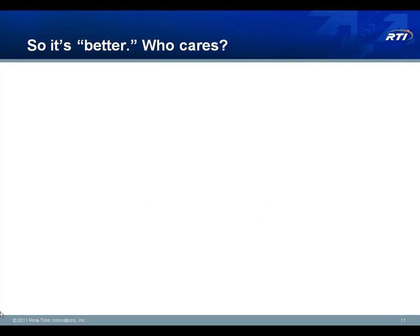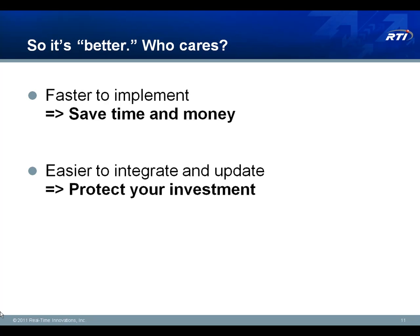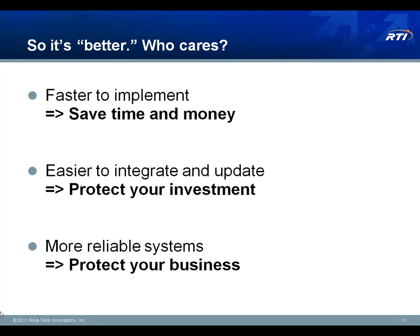If systems are easier to build and easier to integrate, you're going to bring your products to market sooner and at less expense. And if it's easier to change those systems over time, it's going to be easier to release version 2.0 and to do piecewise upgrades of different components and subsystems independently without revisiting everything you've already done. And when systems are more reliable and more resilient to change, you protect the mission-critical functionality of your systems.